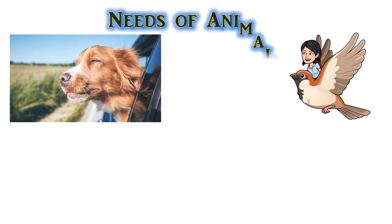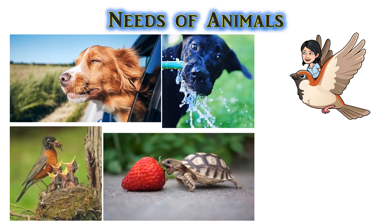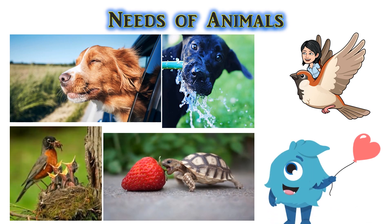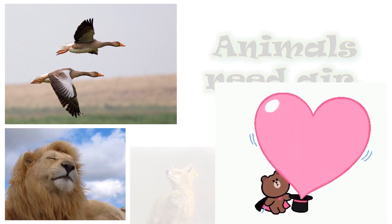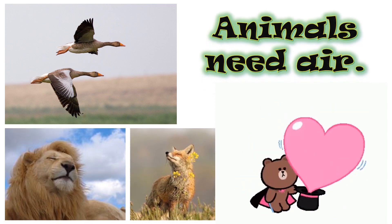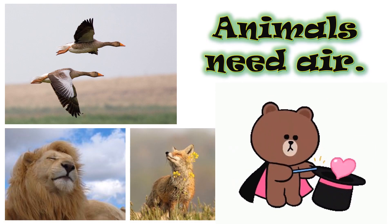Animals need air, water, food, and shelter. They use the air and food they have eaten to produce the energy they need for their daily activities.